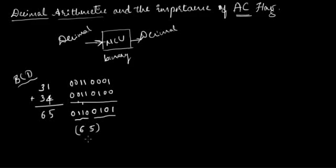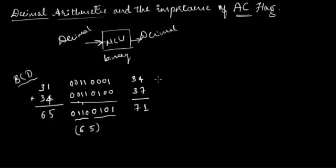Let me take one more example. Say I want to add 34 with 37 — I'm supposed to get 71 as my result. Will I get this result? Let me check. The BCD equivalent of 34 is 0011 0100, and the BCD equivalent of 37 is 0011 0111.